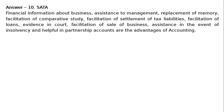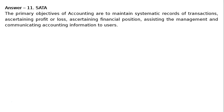Question 11: Explain the primary objectives of accounting. Answer 11: The primary objectives of accounting are to maintain systematic records of transactions, ascertaining profit or loss, ascertaining financial position, assisting the management and communicating accounting information to users.